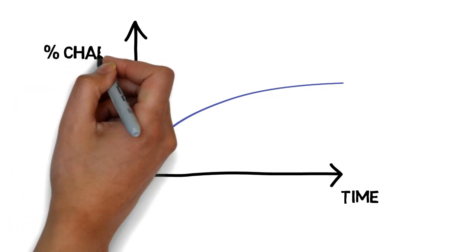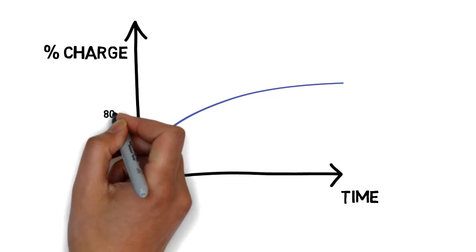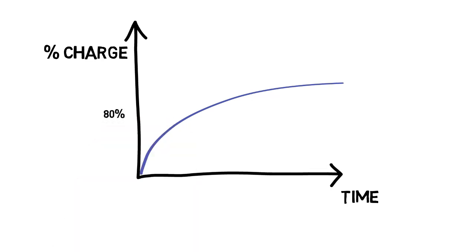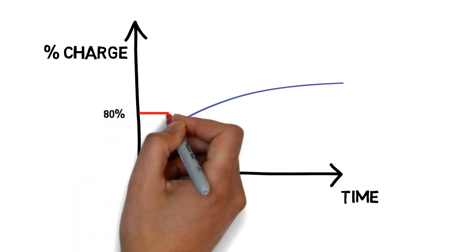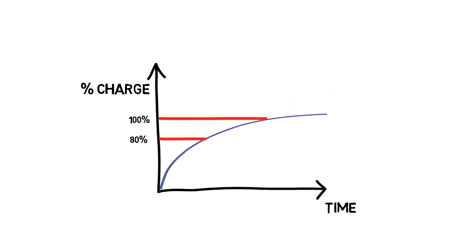It should be noted that charging is an asymptotic process. In other words, from 10% charge to 80% charge of the batteries takes 50% of the time, while topping up the remaining 20% — bringing the charge from 80% to 100% — may require the same amount of time.